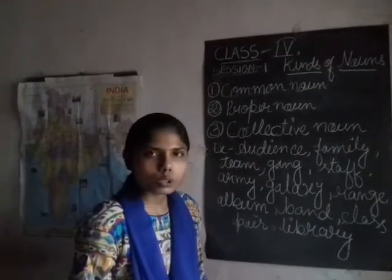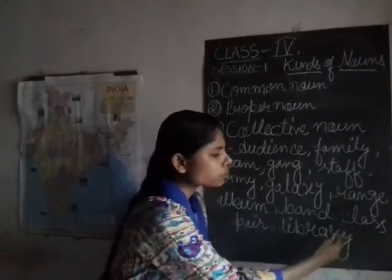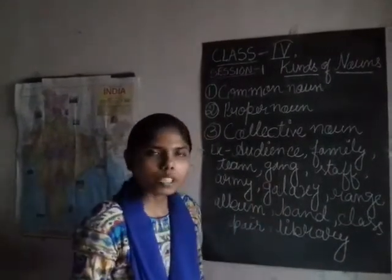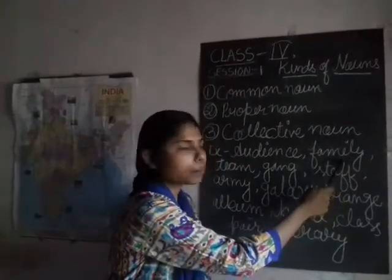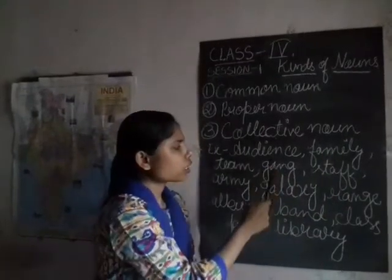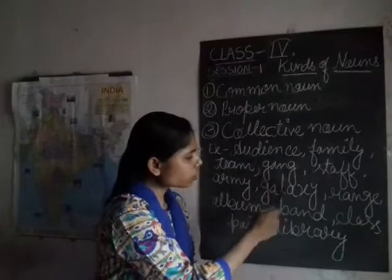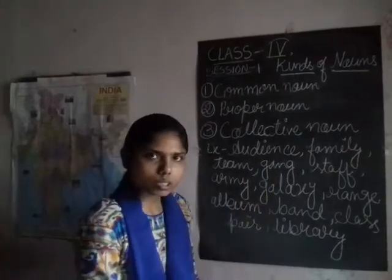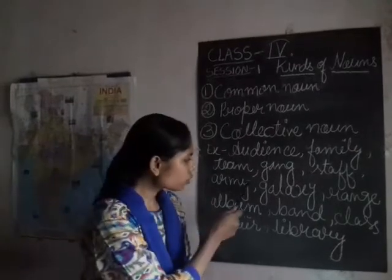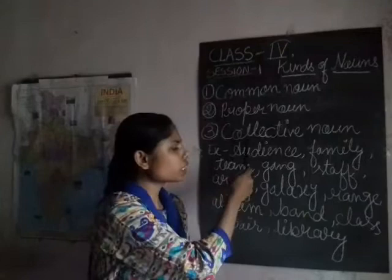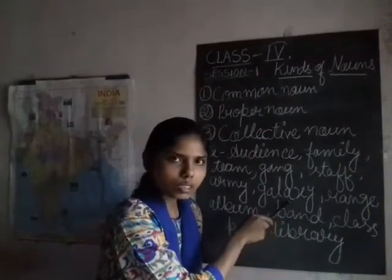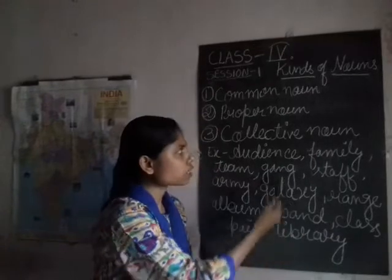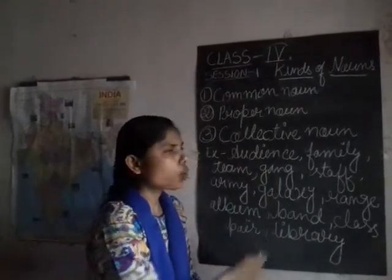A class of students — all the students are included in one class, so this is a collective noun. There are 15 members in my family — all 15 members make a family, so family is a collective noun. A gang of thieves — all thieves make a gang, so gang is a collective noun. An army of soldiers — those soldiers make an army, so army is a collective noun. A galaxy of stars — there are many stars in a galaxy, so galaxy is a collective noun.